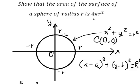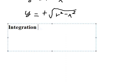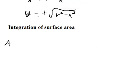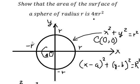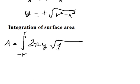Next, we use the positive equation. We rotate around the x-axis so we can find the area of the surface. The formula for the area of the surface is the integration from negative R to positive R of y multiplied by the square root of 1 plus the first derivative of y squared, ds.